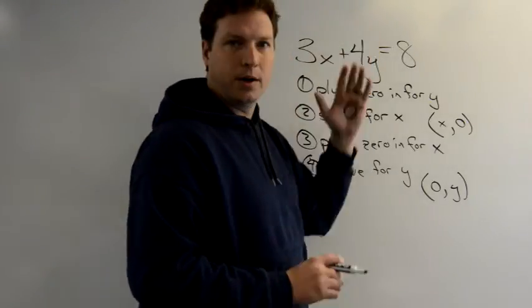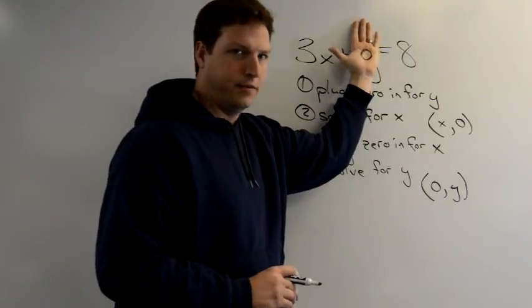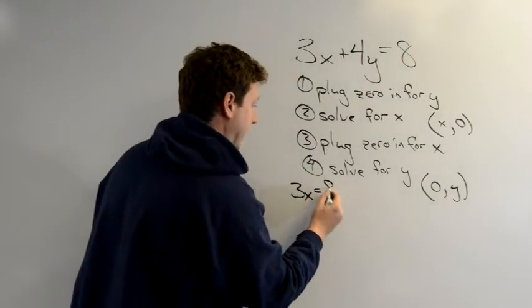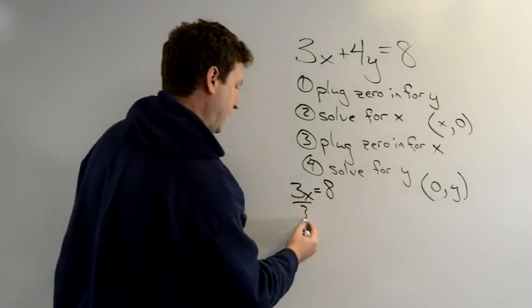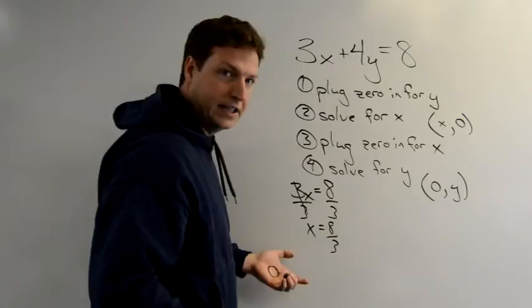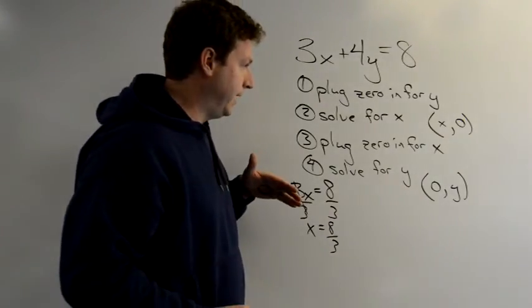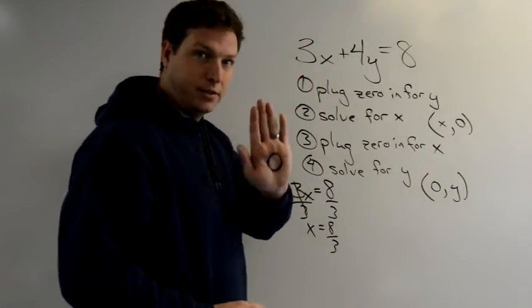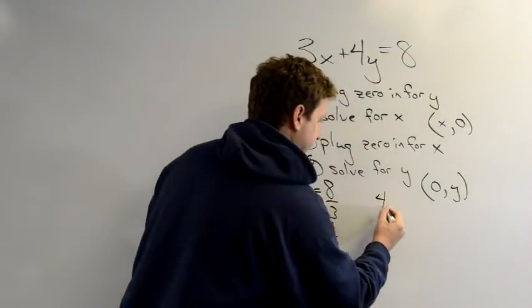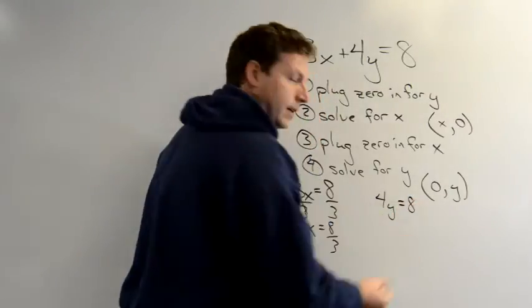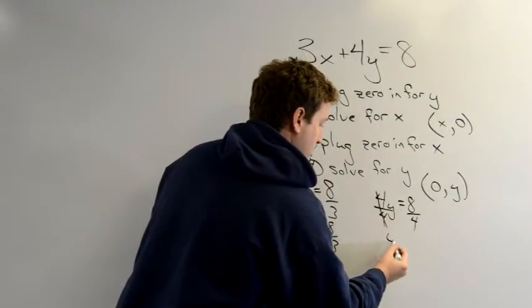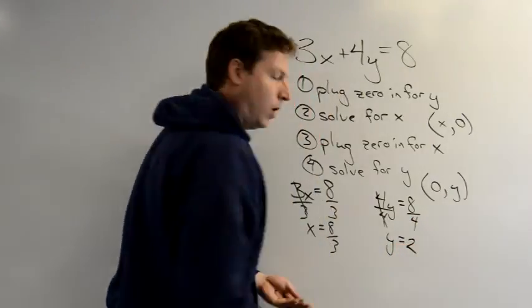I plug in 0 for y. What do I get? This is fancy stuff here. 3x equals 8. Divide by 3, x equals 8 over 3. Easy enough. So I'm going to do the same thing here. Now I'm at step 3. Plug in my 0. So I'm going to 0 for x. 0 for x. I get 4y equals 8. And then step 4, solve for y.